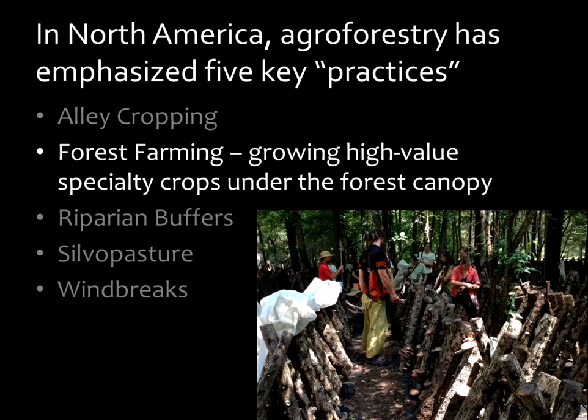Another practice is called forest farming. In this situation, we start with an existing forest and the goal is to integrate other types of high-value specialty crops. Specialty crops are those that aren't the typical large-scale commodity crops. These can be grown in the shade of the forest canopy, and many of them prefer shade — things like mushrooms and ginseng. If a landowner has a forest, this is a great opportunity to add another crop that can go into the marketplace.